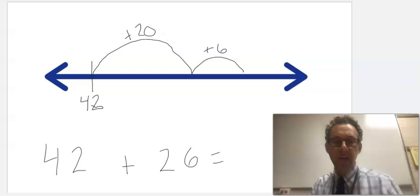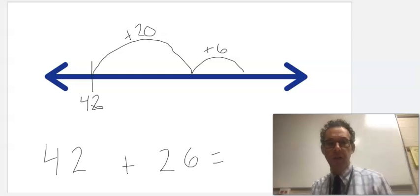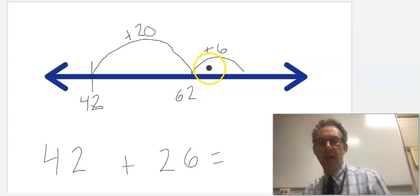Knowing I need to add 26, I then take large jumps that I can do mentally in my head. I know that 42 plus 20 is 62, and then I know 62 plus 6 is 68, and very quickly I can figure out that 42 plus 26 is 68.